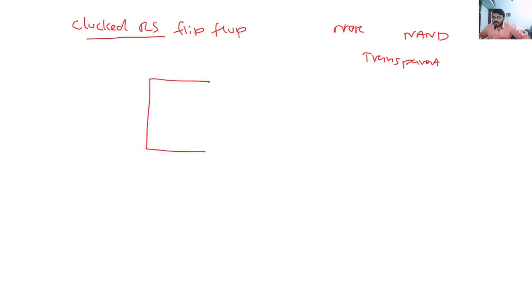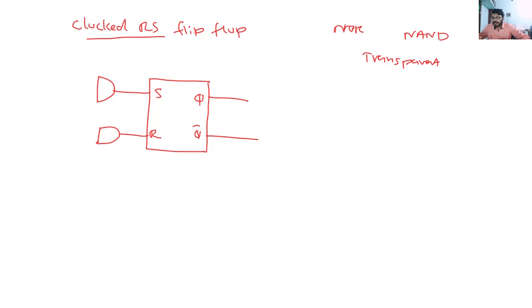To construct a clocked RS flip-flop, we take the RS flip-flop symbol with S and R inputs and outputs Q and Q-bar. To the S input we add an AND gate, and to the R input we add another AND gate. The outputs of these AND gates are connected to the R and S inputs of the flip-flop. Each AND gate has two inputs: the signal input (S or R) and an enable (EN) input. This circuit is called the clocked RS flip-flop.